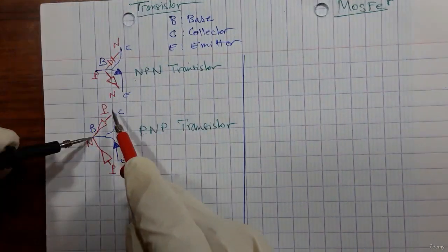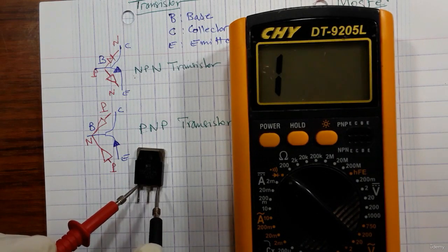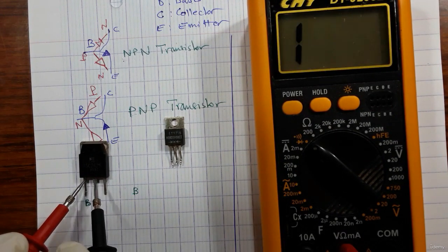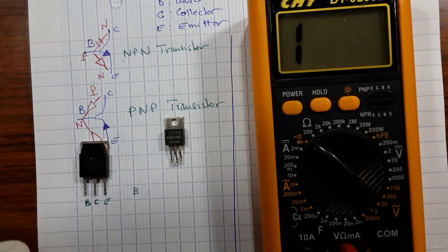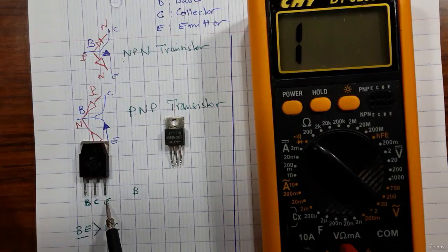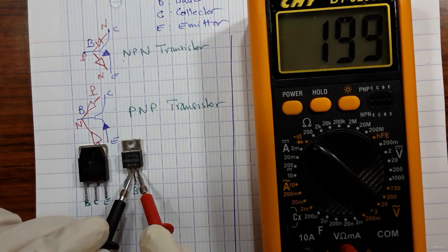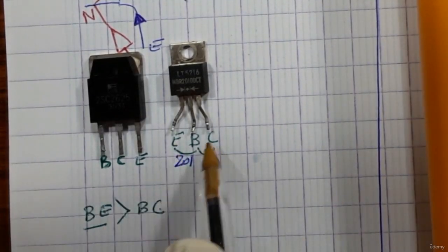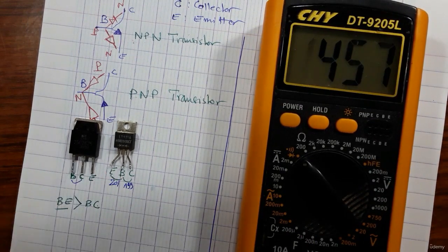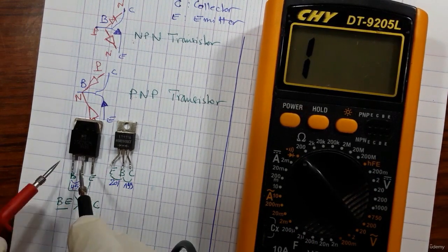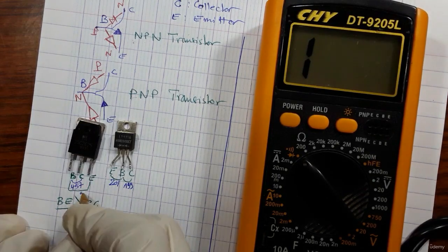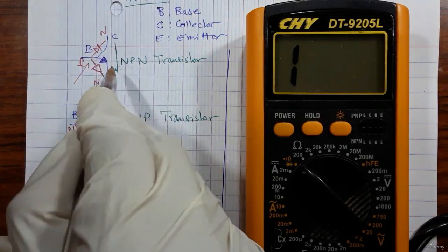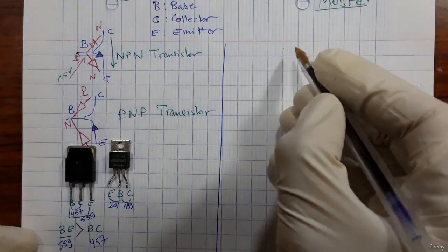Hi, and welcome to Power Electronics Course, where you will learn how to test electrical and electronic components such as diodes, resistors, capacitors, transistors, MOSFET transistors, inductors, transformers, and much more. In this course, you're also going to learn the working principle of electrical and electronic components.